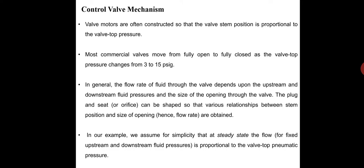Most commercial valves move from fully open to fully closed as valve-top pressure changes from 3 to 15 PSI. In general, the flow rate through the valve depends on upstream and downstream fluid pressures and the size of the opening. The plug and seat can be designed so that various relationships exist between stem position and size of opening. For simplicity, we assume the steady-state flow rate is proportional to the valve-top pneumatic pressure.